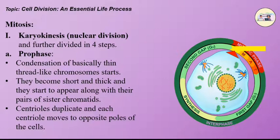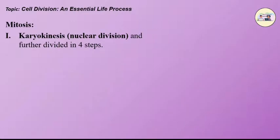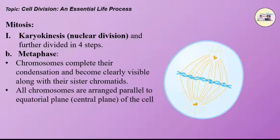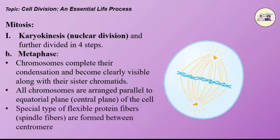The second step is metaphase. Chromosomes complete their condensation and become clear and visible along with their sister chromatids. All chromosomes are arranged parallel to the equatorial plane of the cell. Special type of flexible protein fibers are found between the centrums.